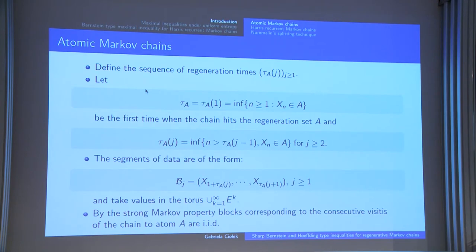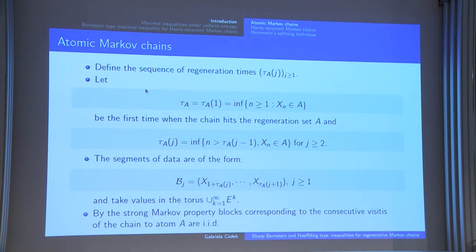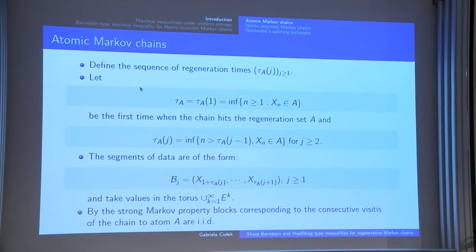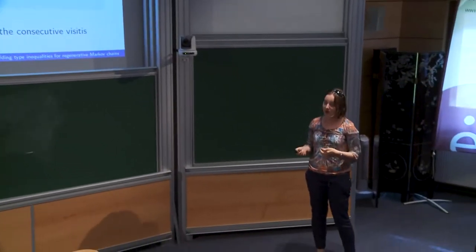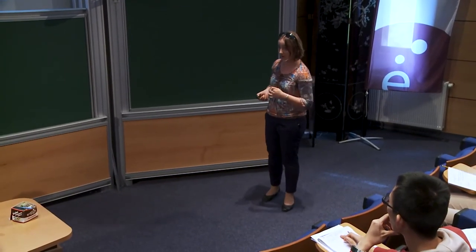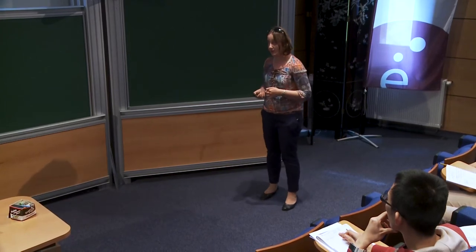When our chain possesses atomic structure, we can define the sequence of regeneration times tau_A^j. By tau_A I denote the first time the chain visits atomic set A, and by tau_A^j I denote all j consecutive visits to atomic set A. With these regeneration times, we can cut our data into blocks corresponding to consecutive visits to the regeneration set A. By the strong Markov property, such blocks are independent and identically distributed. This regenerative structure allows us to generalize theory from the IID setting into the Markovian one, because instead of IID observations, we work with IID blocks.